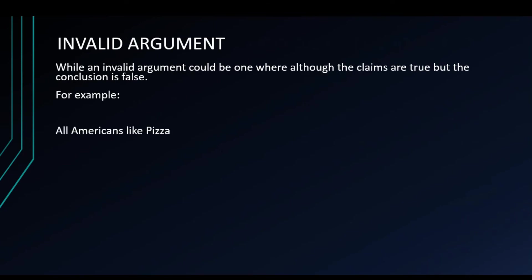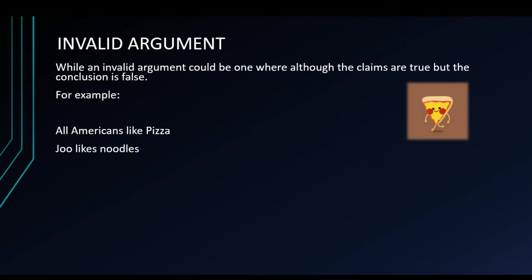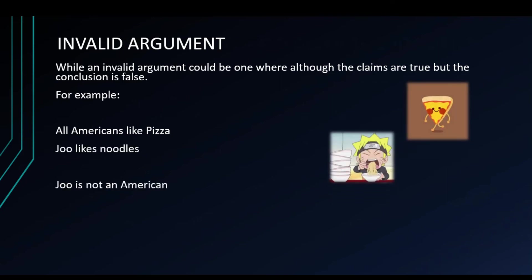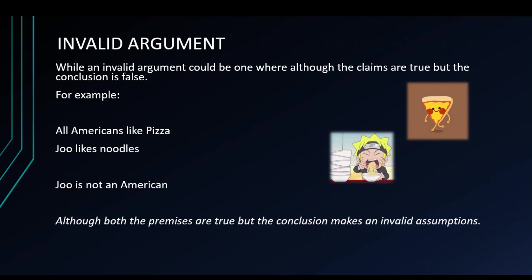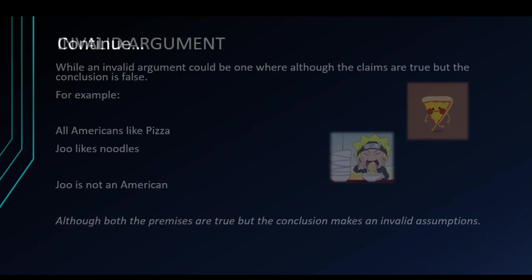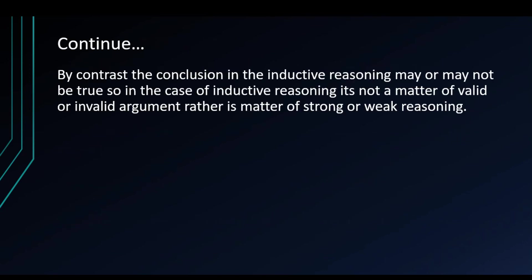An invalid argument could be one where although the claims are true, the conclusion is false. Consider this: 'All Americans like pizza. Josie likes noodles. Therefore, Josie is not an American.' In this example, although both premises may be true, the conclusion makes an invalid assumption — it is an overgeneralization. By contrast, the conclusion in inductive reasoning may or may not be true, so it is not a matter of valid or invalid arguments, but rather a matter of strong or weak reasoning.